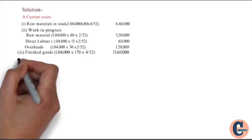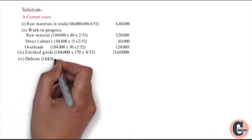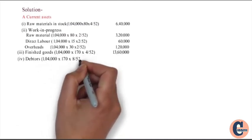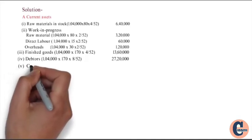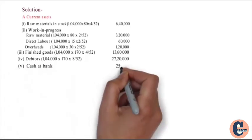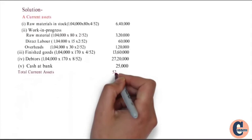Fourth current asset — debtors: 14,000 units produced and sold × cost per unit ₹170 × credit allowed to debtors 8 weeks ÷ 52 = ₹27,20,000. Fifth current asset — cash at bank: ₹25,000. Total current assets: ₹52,45,000.